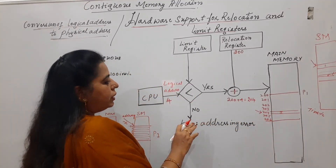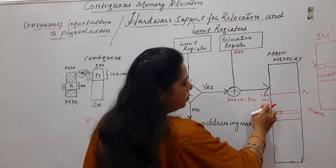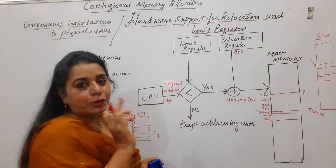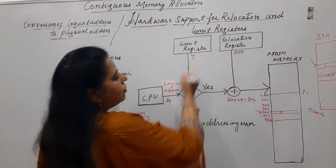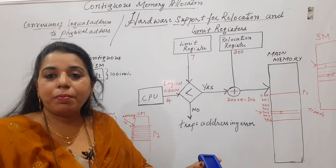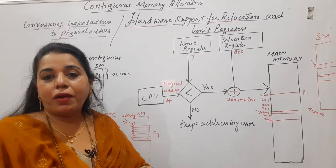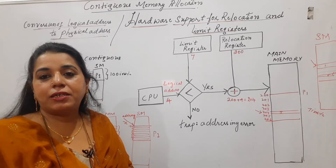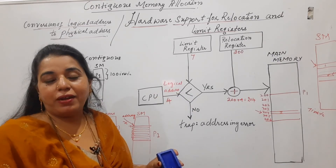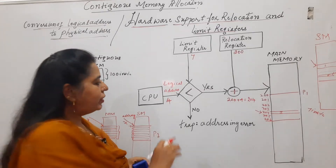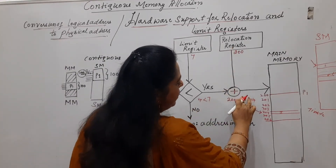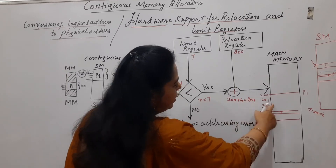But we must always know the size of the process. There are 7 instructions, so 7 locations are valid for process P1. The limit register holds the value 7. If the limit register does not hold the size of the process, an instruction may point to an address outside the boundary of P1, possibly belonging to another process. So the logical address must be checked: if it is less than 7, you add it to the relocation register.